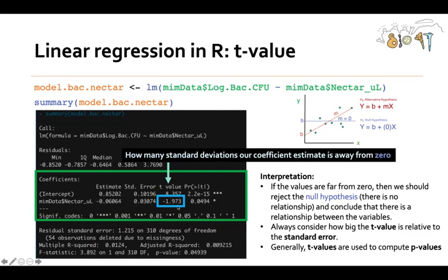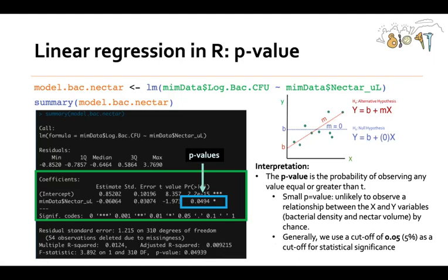But when you're interpreting a t value, you always want to consider how big the t value is relative to the standard error. So if this t value seems like it's really far from zero, but the standard error is also really huge, then that might not be as strong an argument as if the standard error is quite small and the t value is also far from zero. And generally, t values are used to compute p values.